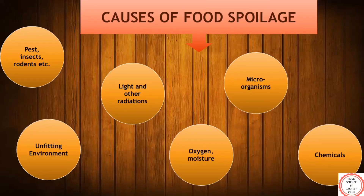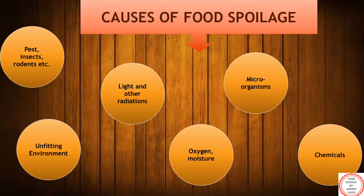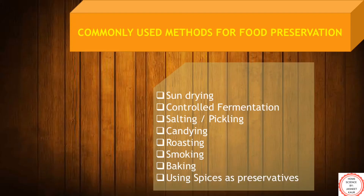The factors which cause food spoilage include pest infestation by insects, rodents, etc., inappropriate temperatures used for processing and storage, excessive exposure to light and other radiations, oxygen, moisture, microorganisms like bacteria, fungus, and molds, chemicals such as pesticides, and many other factors. To avoid food from getting spoiled, certain methods are used for food preservation like sun drying, controlled fermentation, salting or pickling, candying, roasting, smoking, baking, and using spices as preservatives.